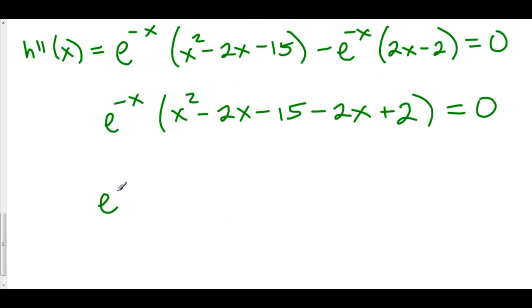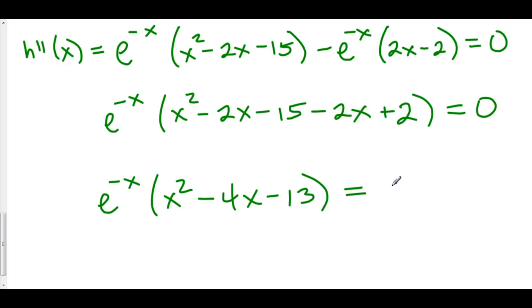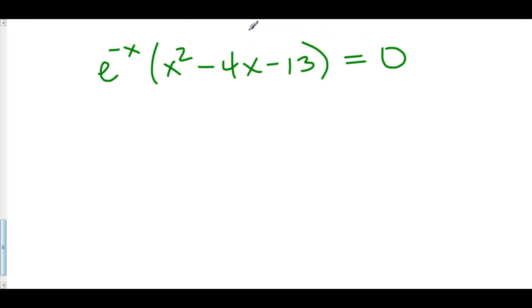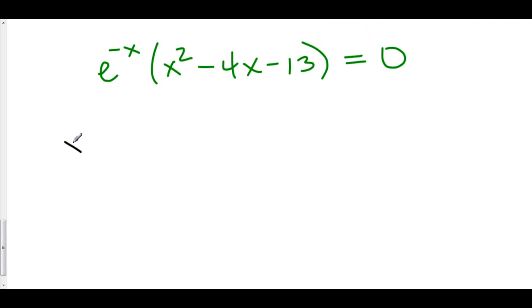Continuing, we have e^(-x) times the combined polynomial. Negative 2x minus 2x is negative 4x, and negative 15 plus 2 is negative 13. So we get e^(-x) times (x² minus 4x minus 13) all equal to zero. Now e^(-x) is never equal to zero, but this polynomial might be. We can't factor it, so let's use the quadratic formula.